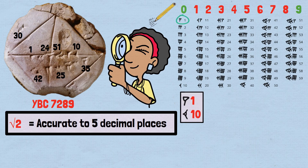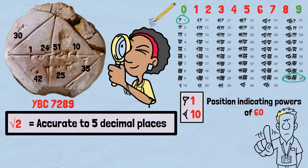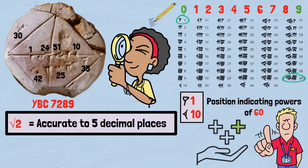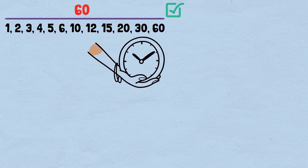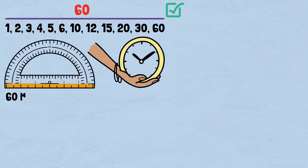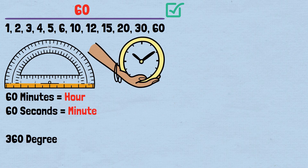These could be combined to represent any value from 1 to 59, with position indicating powers of 60. This base-60 system wasn't arbitrary — it had practical advantages. The number 60 has many divisors: 1, 2, 3, 4, 5, 6, 10, 12, 15, 20, 30, and 60, making fraction calculations easier for trade and construction. This same system survives today in our measurement of time and angles: 60 minutes in an hour, 60 seconds in a minute, and 360 degrees in a circle.